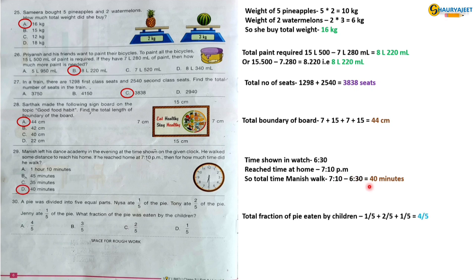Question 30: A pie was divided into 5 equal parts. Nya ate 1/5th of the pie, Tony ate 2/5th of the pie, Jenny ate 1/5th of the pie. What fraction of the pie was eaten by the children? If we combine all the fractions, the total fraction will be 4/5th. So the correct option is option A, 4 by 5.